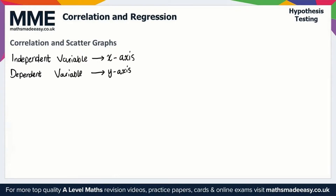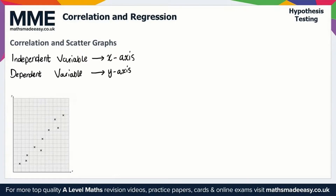In terms of correlation, this comes in three flavors. We have positive correlation. With positive correlation, notice we start in the bottom left and finish in the top right of our graph. As one of the variables increases, the other variable also increases. So this is positive correlation.